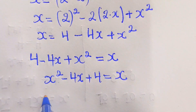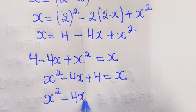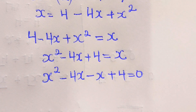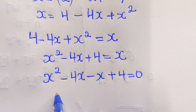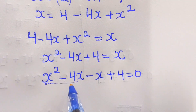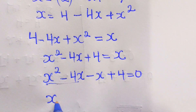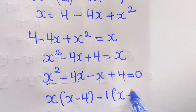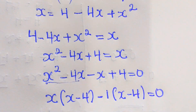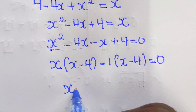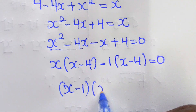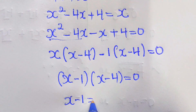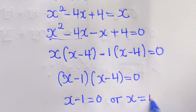Now we are going to group right terms to get x squared minus 4x, then minus x plus 4 equals to 0. We shall factorize here to get x out to get x minus 4, and factorize 1 to get x minus 4 equals 0. So x minus 1 times x minus 4 equals to 0, and x minus 1 equals to 0, or x equals to 4.